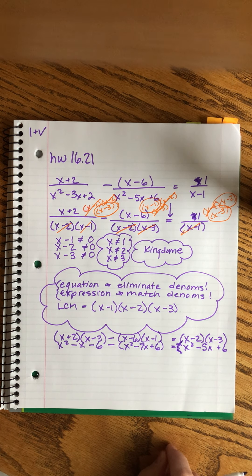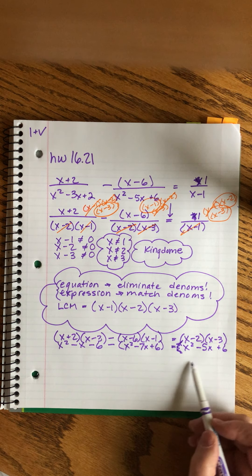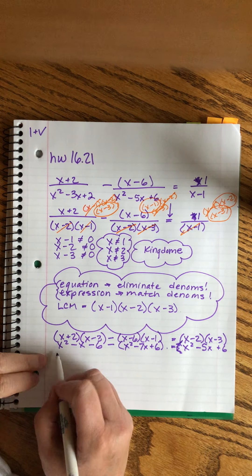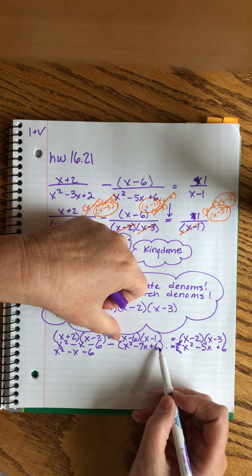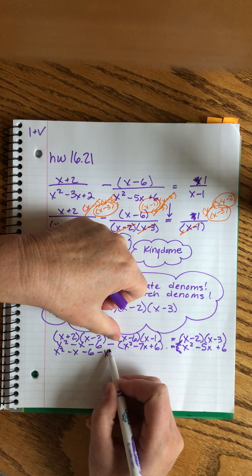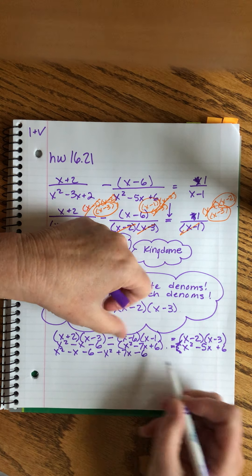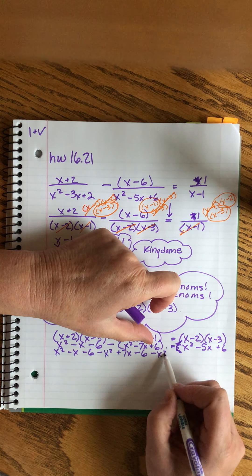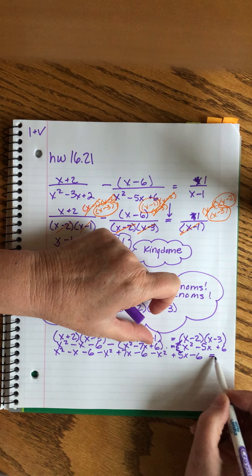I don't need the parentheses there. Now I'm going to do two things in one step: I'm going to change the signs here and bring these three terms over to the left side. This part I'll just copy. Then these three — the signs change — so it's minus x² plus 7x minus 6. And then these will come over so their signs change too: minus x² plus 5x minus 6 equals zero.